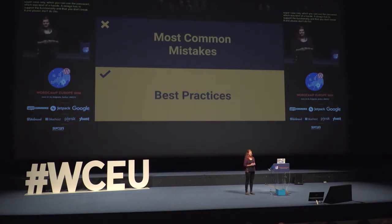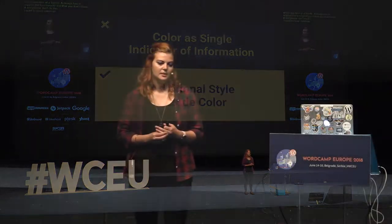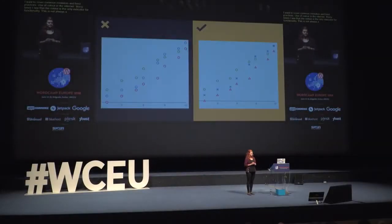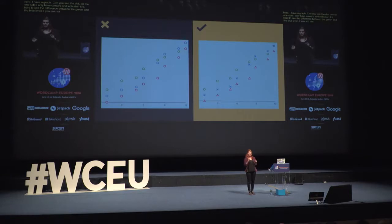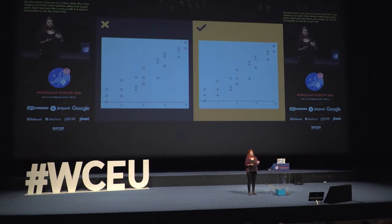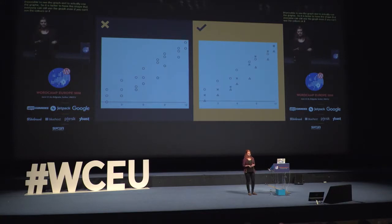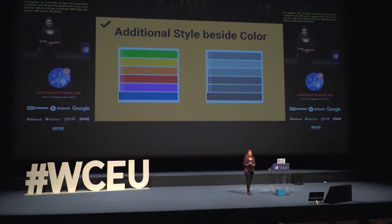I want to share some of my mistakes and best practices. An important one is the use of color. Many times color is the only indicator for information or functionality, which is not good. You should always add a style or shape beside the color. Here I have a graph — on one side I only use colors as indicators, and it's quite hard to see the difference between green and blue, even if you're not colorblind. But if you add shapes, it's much more obvious. In grayscale it's nearly impossible to use the graphic without the shapes. A really good example is Trello, which added styles to labels so you can still use them even if you can't see the colors.